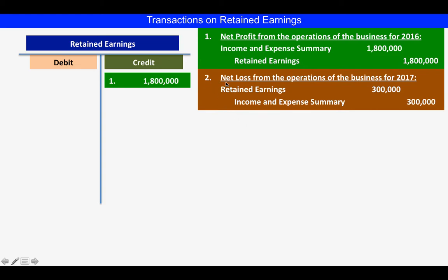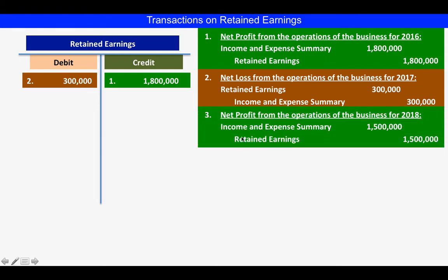Next, if the company incurred a loss in 2017, the income and expense summary will have a debit balance. That debit balance will be closed to retained earnings, so we debit the retained earnings account and credit income and expense summary. Our assumption is that the loss is three hundred thousand. This results in a debit of three hundred thousand to retained earnings. Then for 2018, there is again a net profit of one million five hundred thousand, so we debit income and expense summary and credit retained earnings.